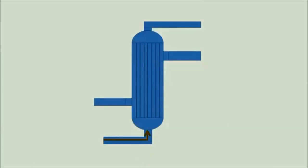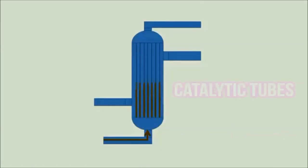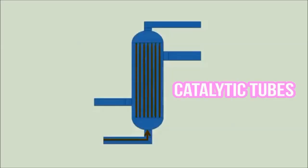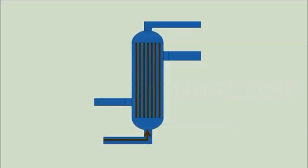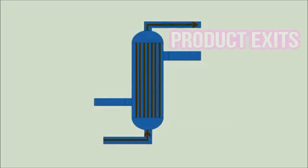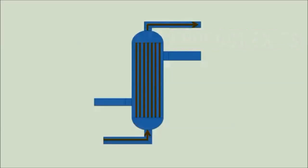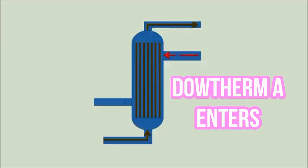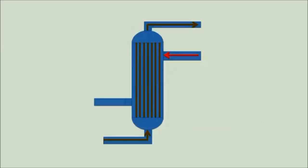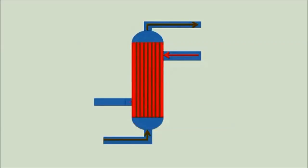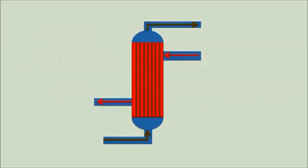Methane and steam enter the reactor through the first inlet and proceed to the catalytic tube to be reformed. Then, the product exits through the outlet so that it can be supplied to PSA for the purifying process. At the same time, dowtherm A enters the reactor through the shell side to maintain the temperature of the reaction.